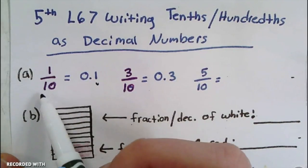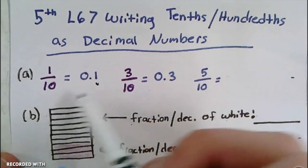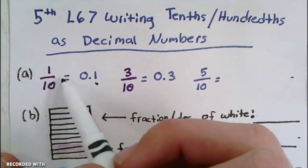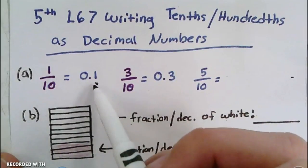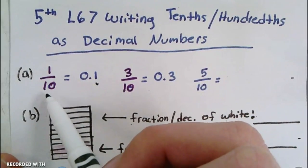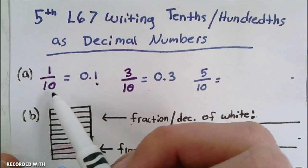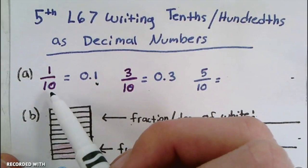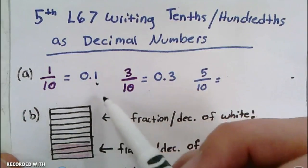How do you write one-tenth as a decimal? Well, you just put whatever the numerator is in the spot of the denominator, which is the tenths spot. In other words, if a fraction has a denominator that's a multiple of ten—either 10, 100, or 1000—it's really easy to write as a decimal.